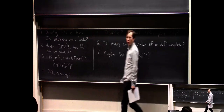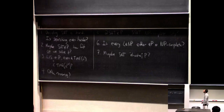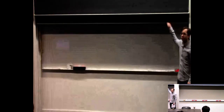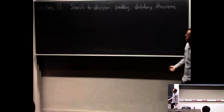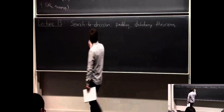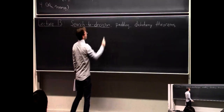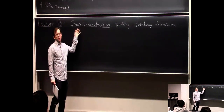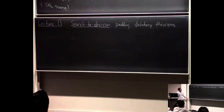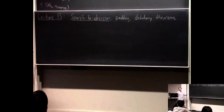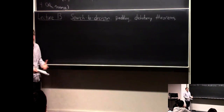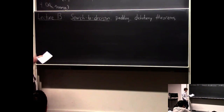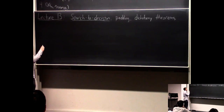Three topics on the agenda today. First: search to decision — it really means reducing search to decision. If you have the ability to solve a decision problem, a yes-no problem, can you solve the search version, where you're looking for an actual answer, not just whether there is an answer? We may have talked about this specific example before, maybe you've seen it in 251, but let's go over it because it's quite interesting.